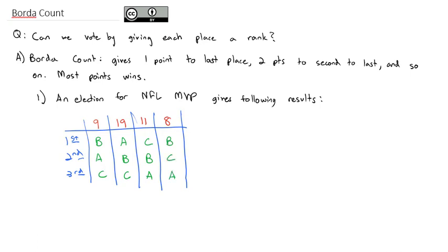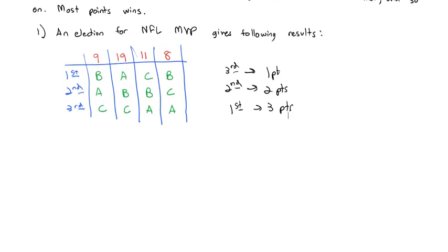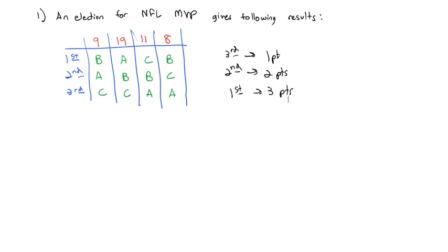There are 11 votes cast that rank CBA. So what we're going to do is we're going to give third place one point, second place then gets two points, and first place then is going to get three points.